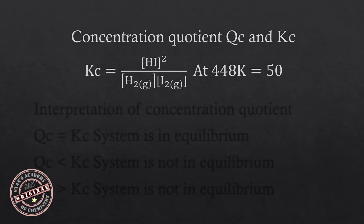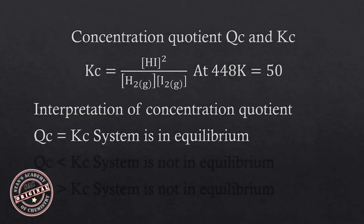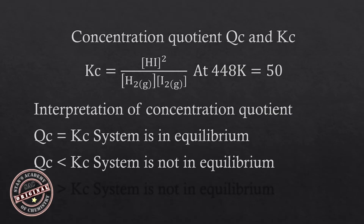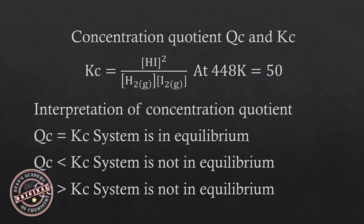We have established that for this reaction the equilibrium constant Kc is 50. From this we can say three things. First, if Qc equals Kc, the system is in equilibrium. Second, Qc can be less than Kc. Third, Qc can be greater than Kc. In both the latter cases, since Qc differs from Kc, the system is not in equilibrium, meaning there will be a shift — more reactants will change into products, or more products will change back into reactants — and we say there is a shift in equilibrium.